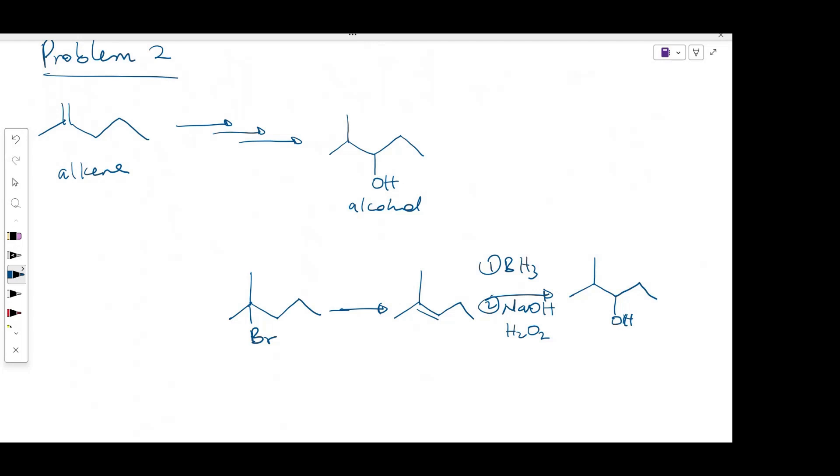So in this case, I cannot use a bulky base, because a bulky base will place the double bond here. So I will have to use a regular base, such as sodium ethoxide. I could also use sodium hydroxide. Now this base will convert this alkyl halide to this alkene.